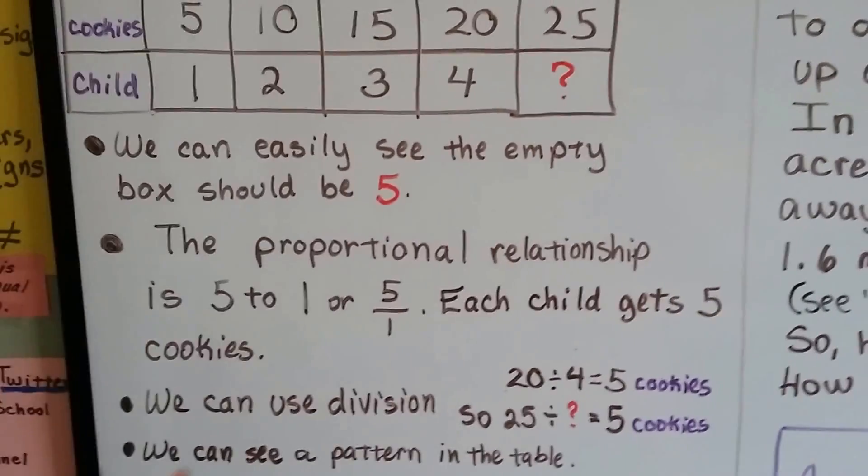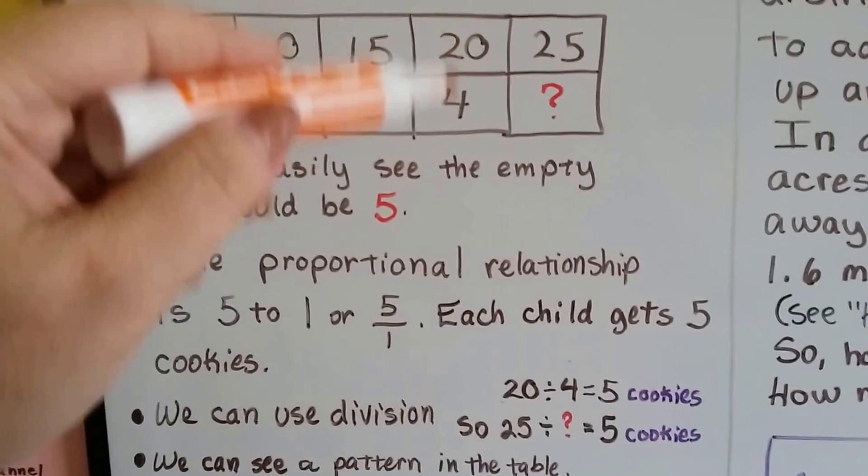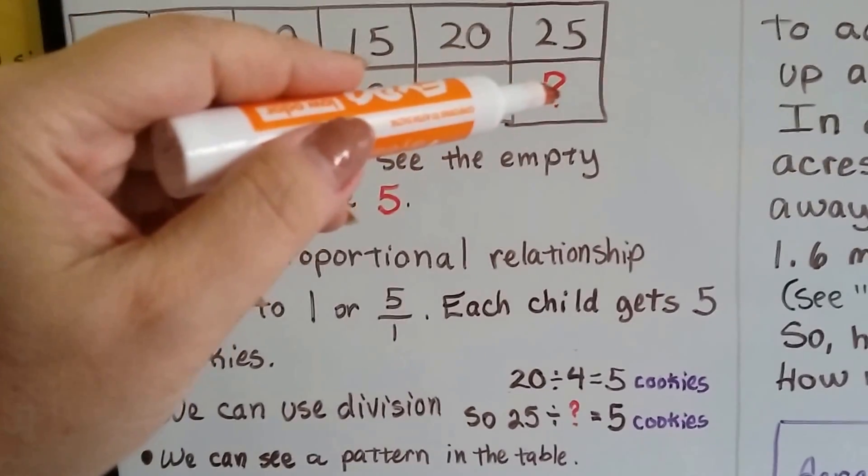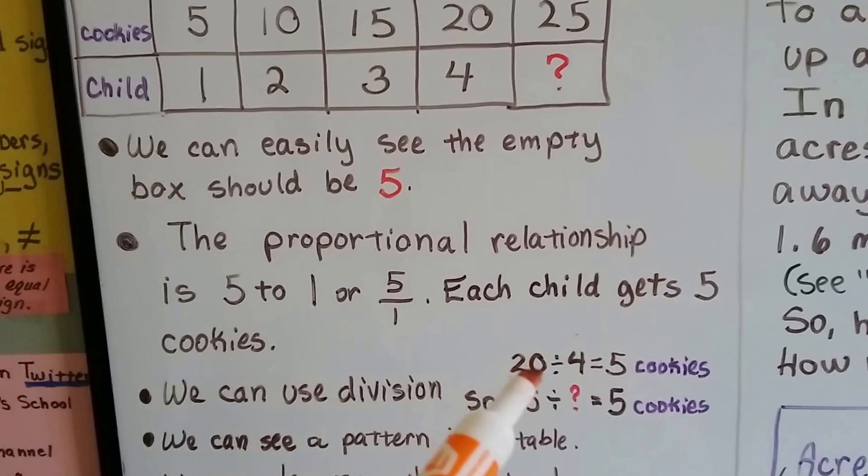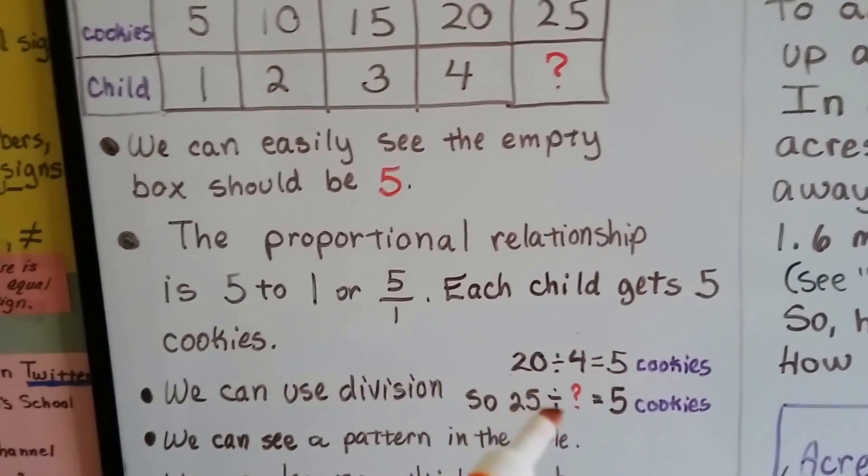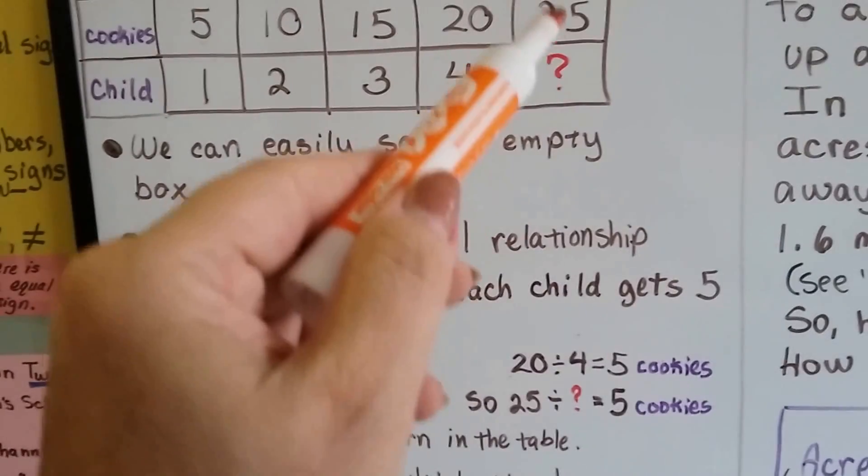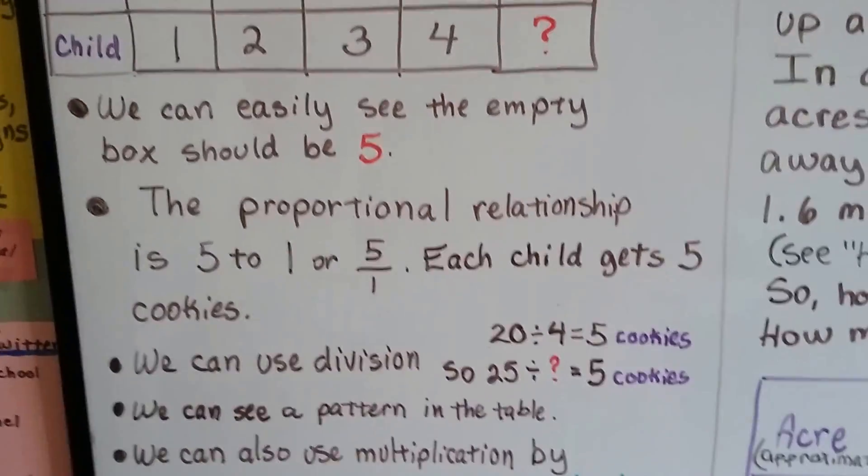We can use division. Looking at this figure, we've got 20 over 4 should be equal to 25 over something. 20 divided by 4 is 5, so 25 divided by something is 5. That would be 5. Between the pattern and using the division, we can see how it would fit.